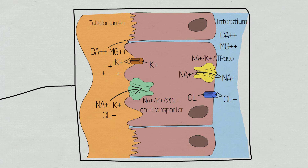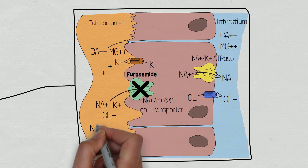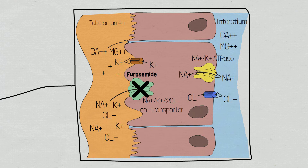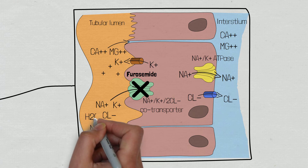The sodium-potassium-2-chloride co-transporter is the target site of feruzamide. Feruzamide inhibits these pumps from working, and therefore sodium, potassium and chloride fail to be reabsorbed into the tubular cell and remain within the tubule. This will therefore reduce the amount of sodium and chloride entering the interstitial space, reducing the osmolality or saltiness of the renal medulla. This means less water is reabsorbed from the descending limb of the loop of Henle. This effect is further enhanced because it increases the osmolality or saltiness of the filtrate, so more water is kept within the renal tubule and lost in the urine.